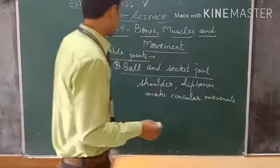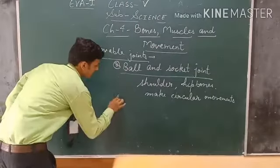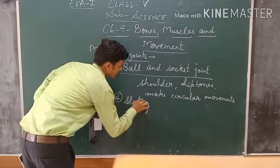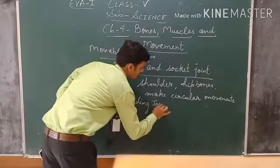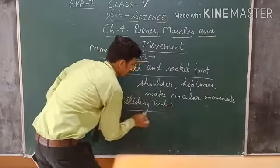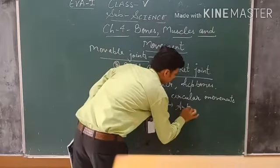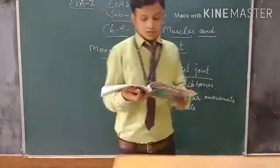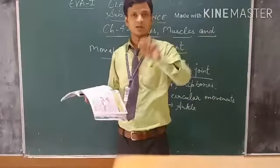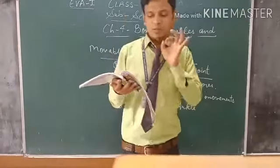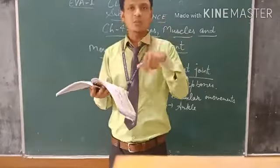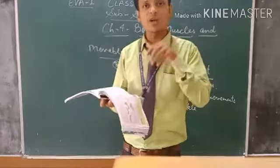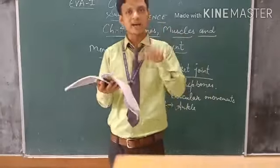The fourth type is the sliding joint. In this joint, the bones glide over each other. It is found in our wrists and ankles.